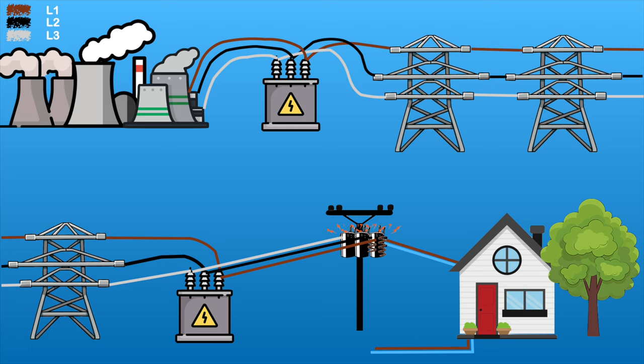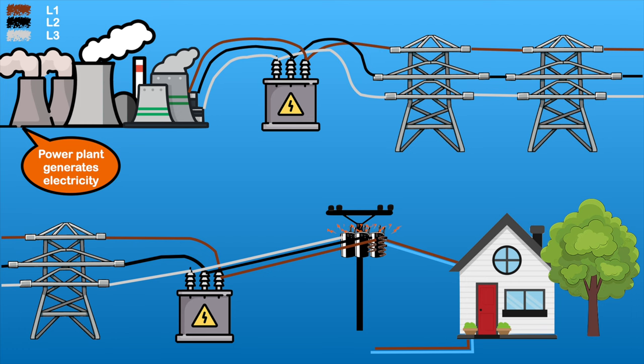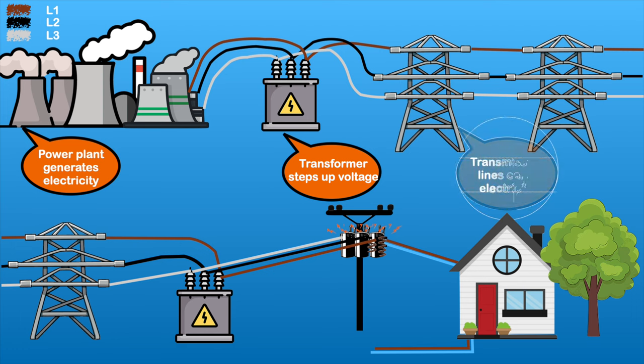The first thing I want to do is go back to the very beginning and go from the source of where the power is generated and how that makes its way to your home. So to begin with, the power plant generates the electricity which is three-phase alternating current. The voltage is then increased significantly in a step-up transformer. When voltage is stepped up, the current reduces relative to the voltage so that the power remains constant — in other words, the higher the voltage, the less energy losses you have when transmitting the electricity. The transmission lines then carry that electricity over long distances.